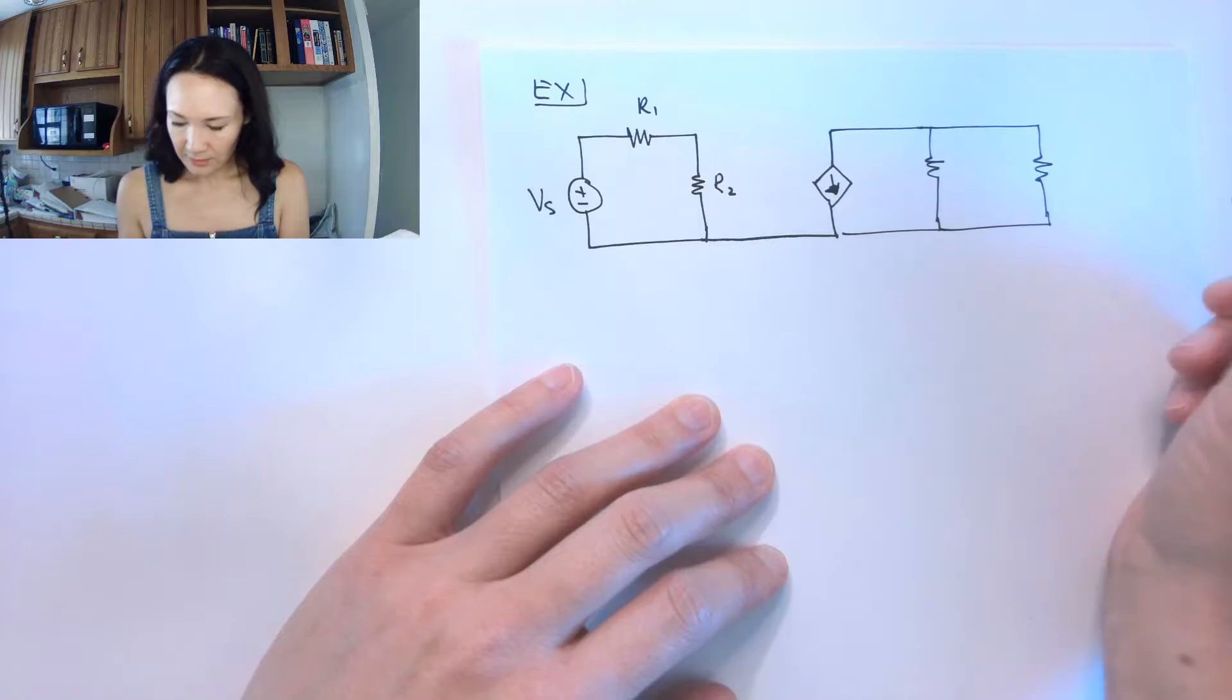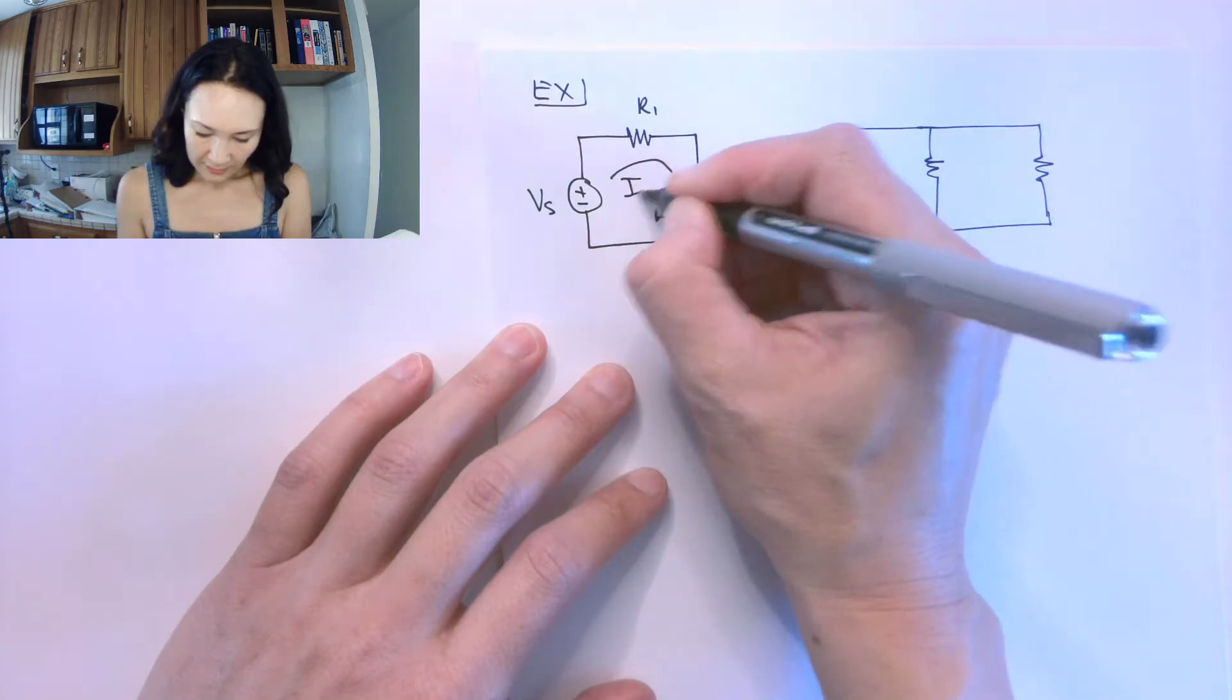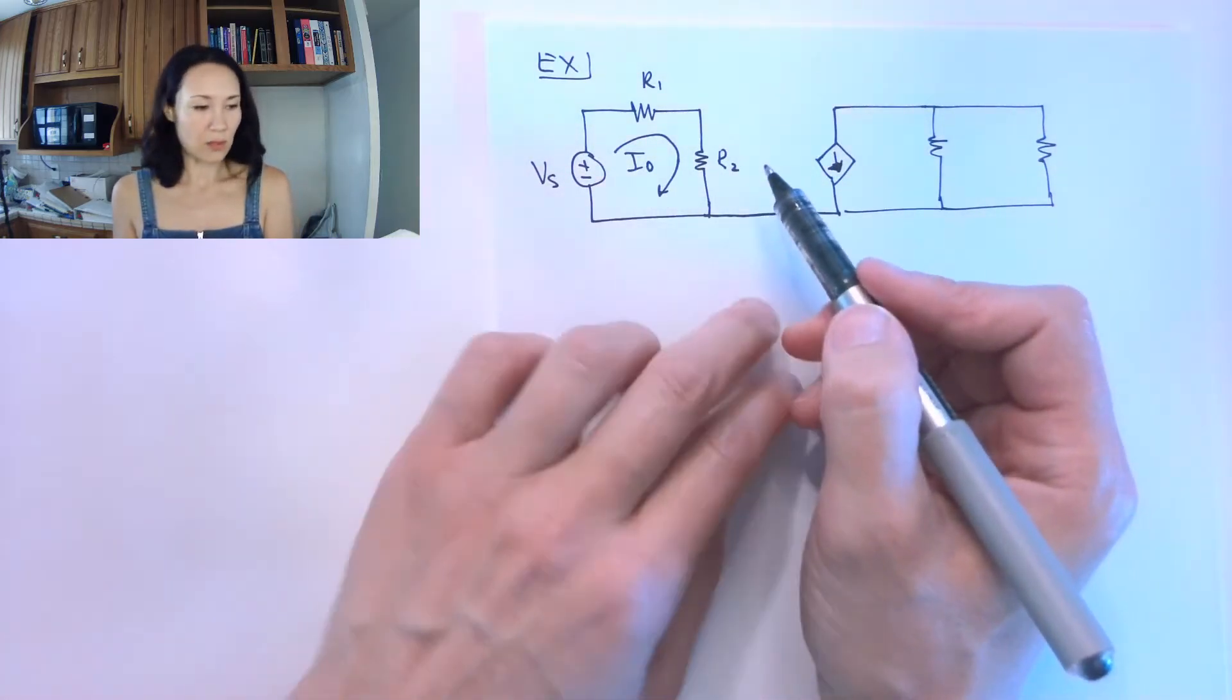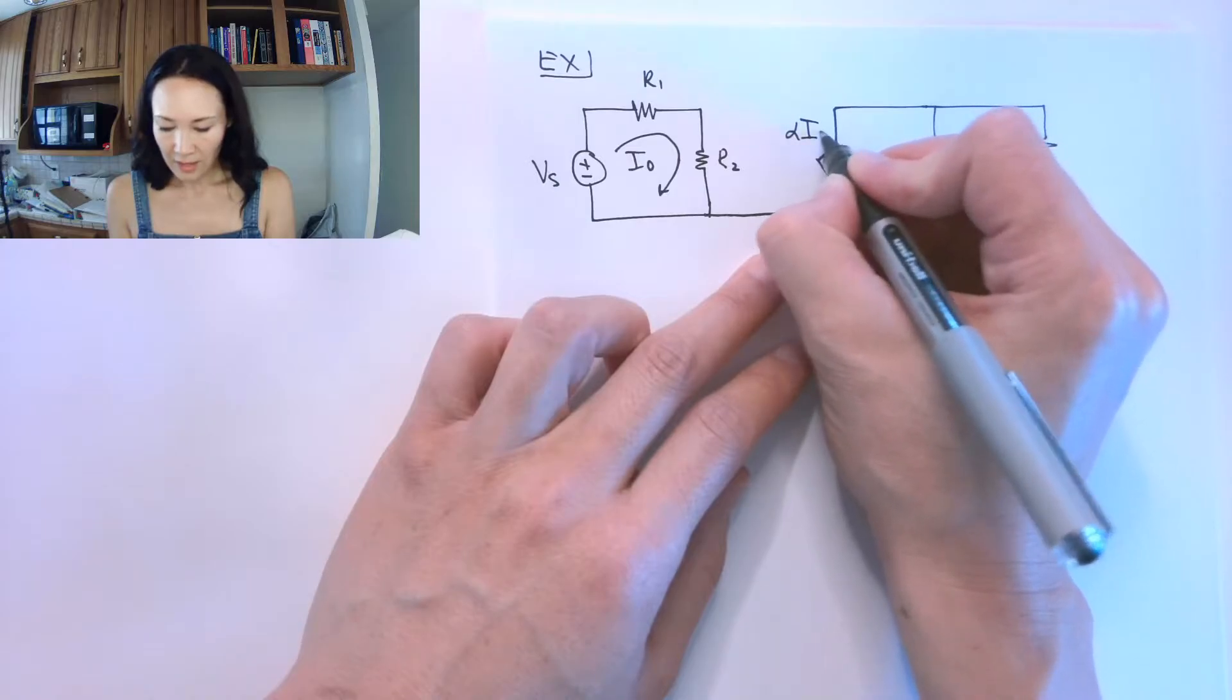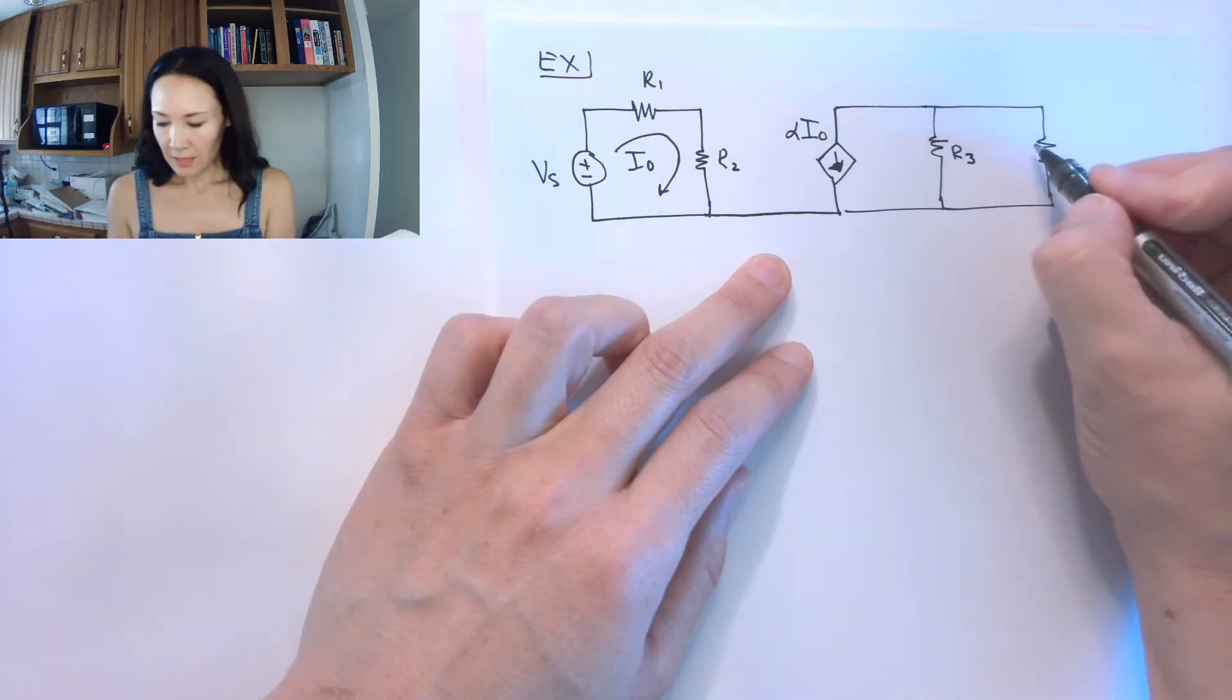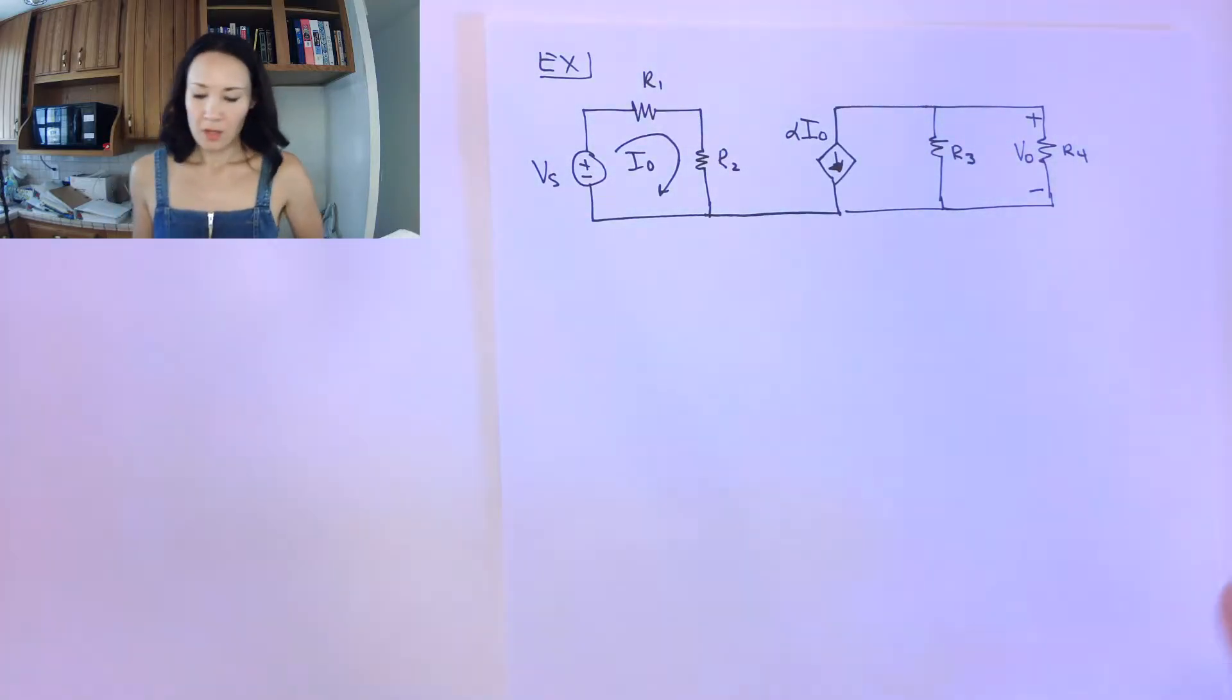Let's label some of these. Let I0 be the current going through this first stage of our circuit. Let this dependent current source be given by alpha times I0. Let this resistor be R3, and let this resistor be R4. And then the voltage drop across R4, we'll call that V0.